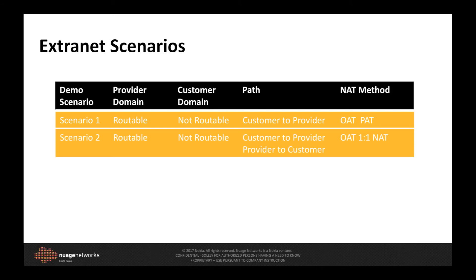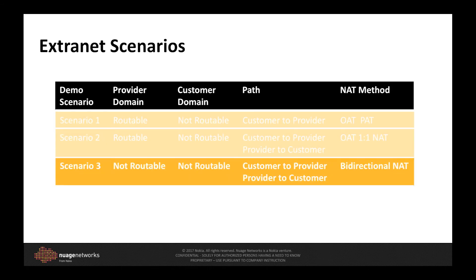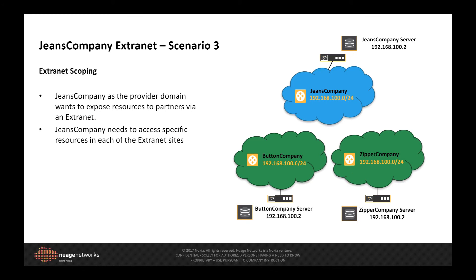The techniques we have used up to this point are primarily available to us as we have been able to route the provider domain into each of the customer domains where access is required. However, what about cases where this is not possible? The simplest reason for this restriction is that all IP addresses could overlap, but it could also be that we do not want to advertise any foreign networks inside the customer or provider domains. So in this case, we are going to introduce a new technique called bi-directional NAT. In scenario three, we have a similar setup to scenarios one and two. However, in this case, the button and zipper company customer domains are running the same IP address space as the Jeans company provider domain.